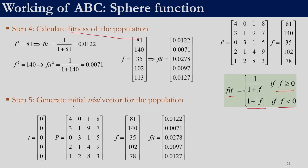The next step is to generate the initial trial vector. The number of elements in the trial vector equals the population size or number of food sources — 5 entries here. Each entry corresponds to the number of failures encountered by that particular solution. If solution [4,0,1,8] fails in any phase, we increase the trial value by 1 for that food source. So now we have the trial vector, the food sources, the objective function values, and the fitness function values.